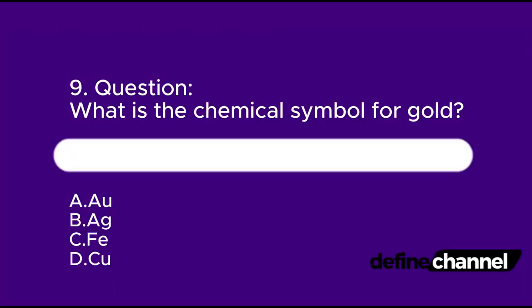Question 9. What is the chemical symbol for gold? A. Au. B. Ag. C. Fe. D. Cu. Which is the correct answer?